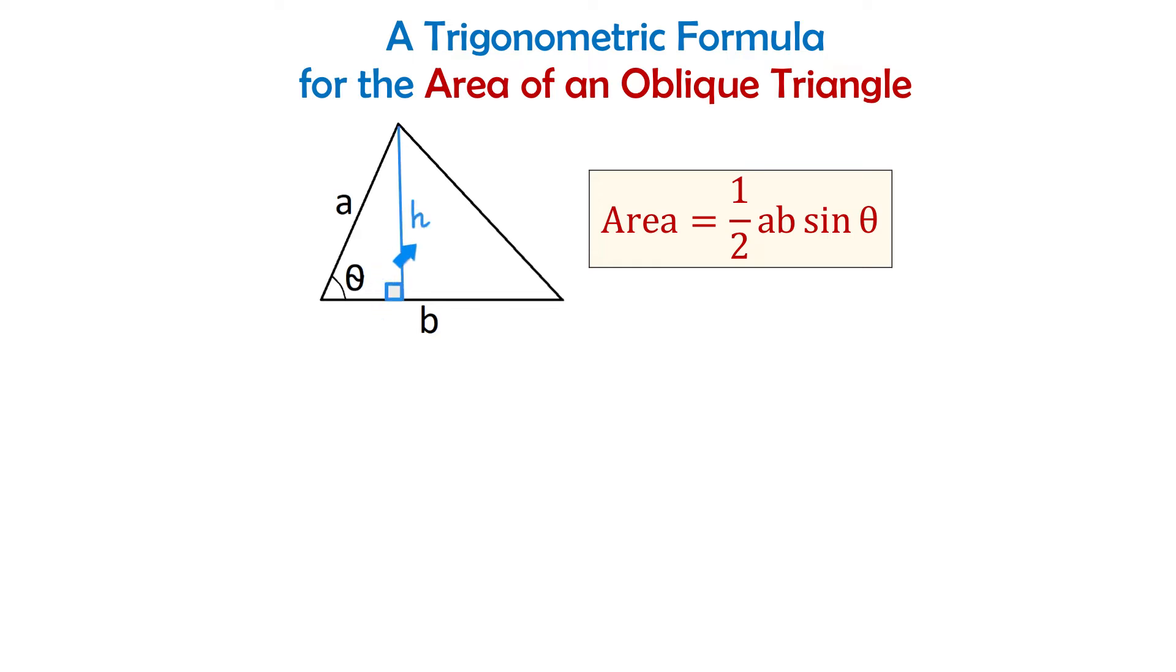Now we have the height denoted by h, and from geometry we know that the area of a triangle can be found by multiplying one half times base times height.